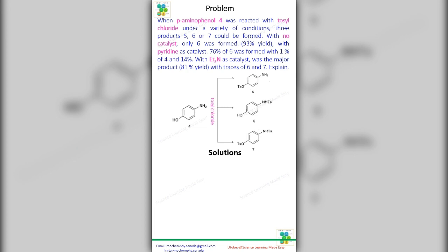With no catalyst, only 6 was formed, 93% yield. With pyridine as catalyst, 76% of 6 was formed,